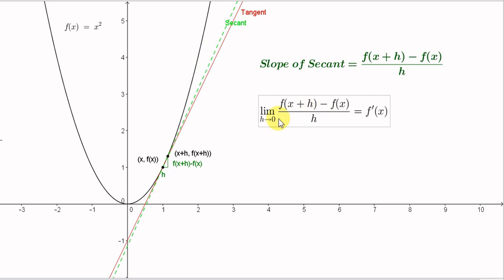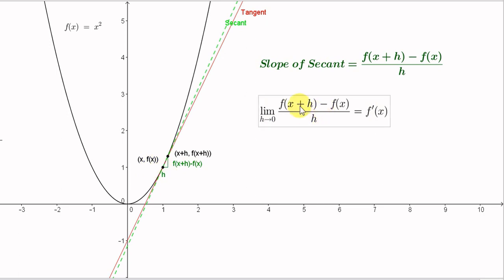Here is our statement for the limit as h tends towards zero of the slope of the secant. Here we have the notation for the slope of a tangent to a curve at a general point x. This can be read f prime of x — it's the slope of the tangent at general point x. So we have to calculate this limit to find the slope of a tangent to the curve at a general point x.